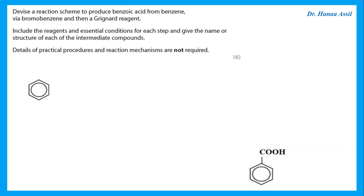Starting from benzene, to change it into bromobenzene we react the benzene ring with bromine in the presence of anhydrous iron(III) bromide as a catalyst. This performs electrophilic substitution, placing bromine on the benzene ring to give bromobenzene.